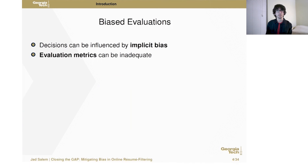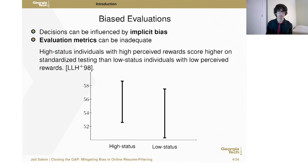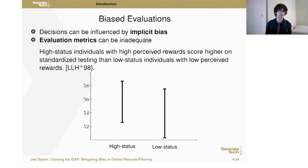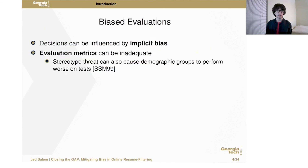Another way that evaluations can be biased is if the evaluation metric itself is inadequate. One study showed that high-status individuals tended to perform better than low-status individuals: test takers were randomly assigned high and low status, and high-status individuals had a higher perceived reward for good performance, leading them to perform better. Another mechanism is stereotype threat — if a test is announced to exhibit differences across groups, members of the stereotyped group will tend to perform worse on that test.